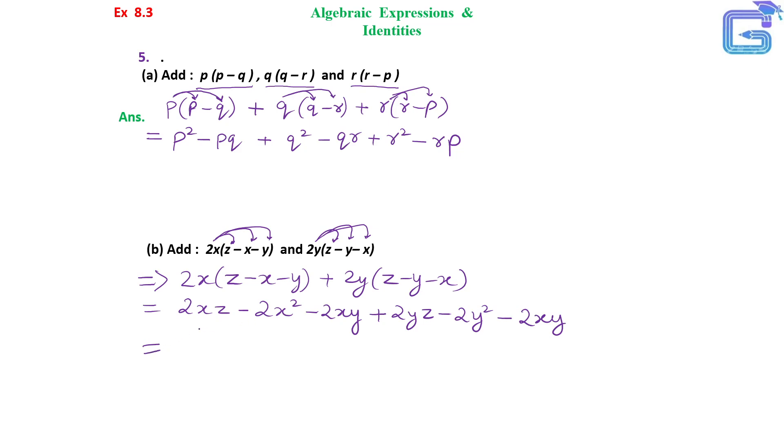Now we will find the like terms. 2xZ is the only term here. 2x square, there is one term alone in x square. 2xy minus 2xy and minus 2xy here, so minus 2 and minus 2 is minus 4xy.